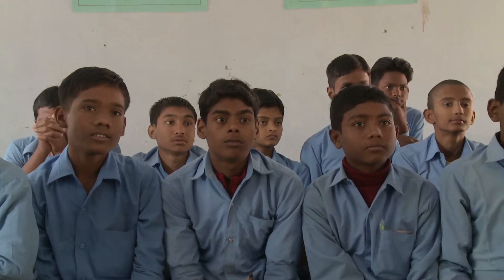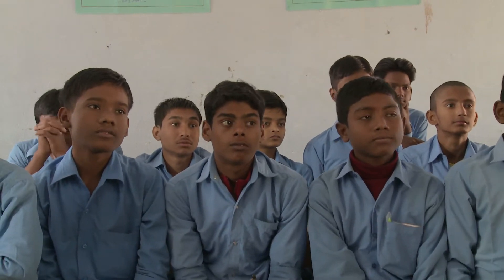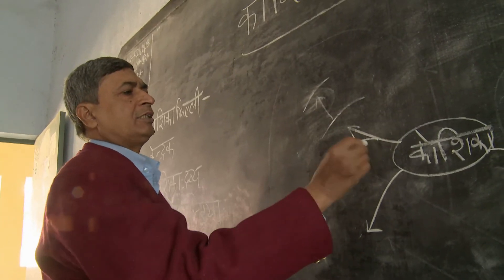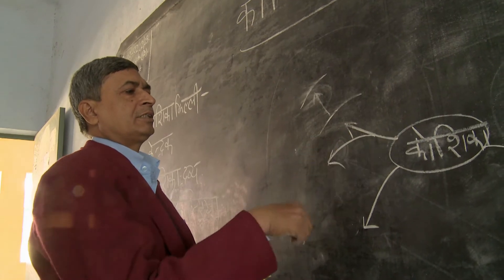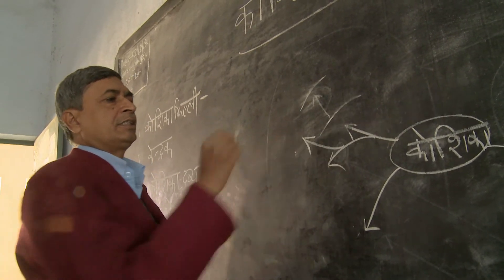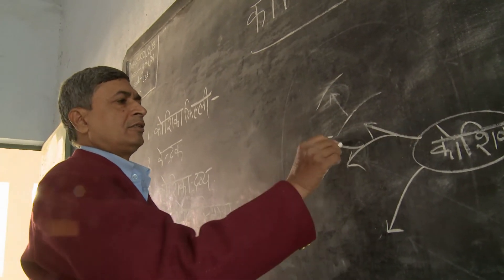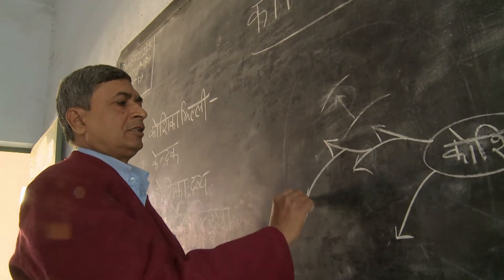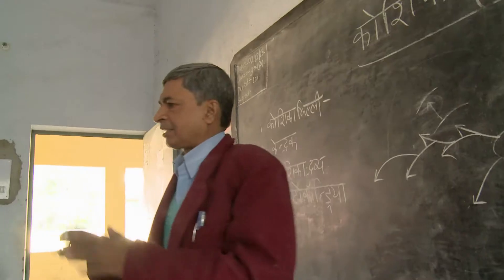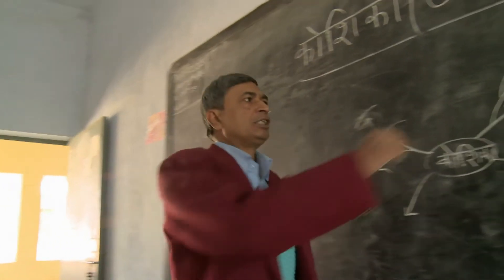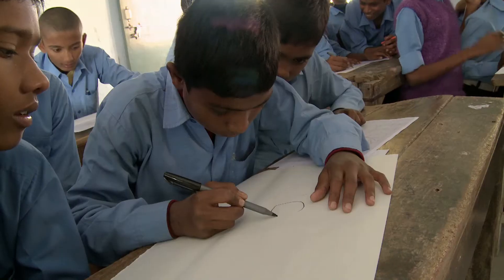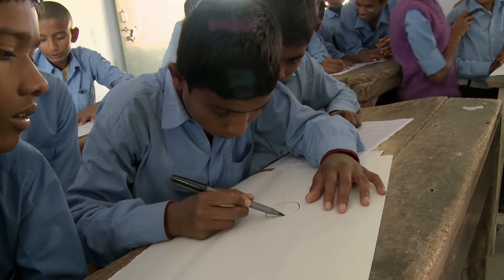Next, the teacher shows his students how to create a visual representation of what they have learnt about cells. It's called a mind map, and ideas are written out like the branches of a tree. The students' diagrams tell the teacher how much they have understood.